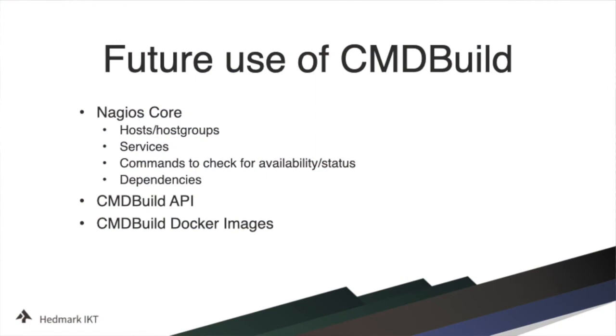On the next slide, this is how the Nagios Core integration model should probably look. This is just a preliminary model, so we're going to test it first and see how it works, but it pretty much reflects the relationships between different object definitions in Nagios. We will of course use the Docker CMD Build image to test this model. This is just a part of the model, so it will probably be a little bigger.